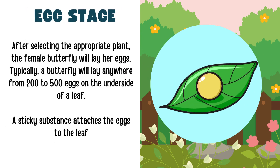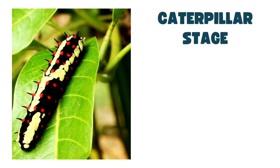In the egg stage, the female butterfly lays her eggs on the underside of the leaf. She may lay anywhere between 200 to 500 eggs. The eggs are attached to the leaf with a sticky substance so that the eggs don't fall on the ground.